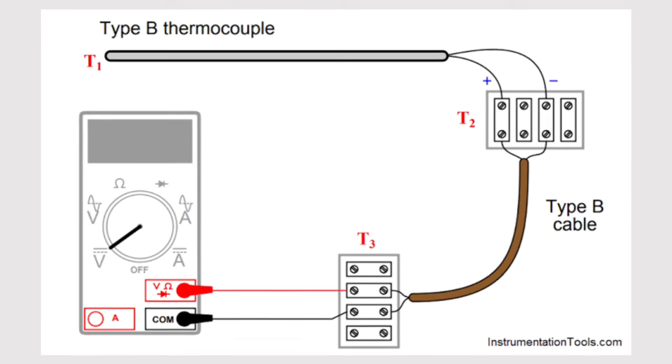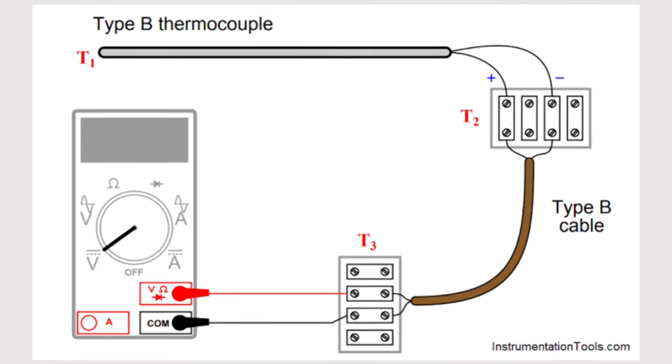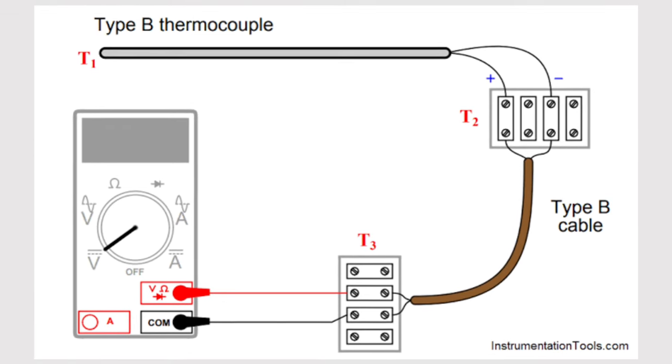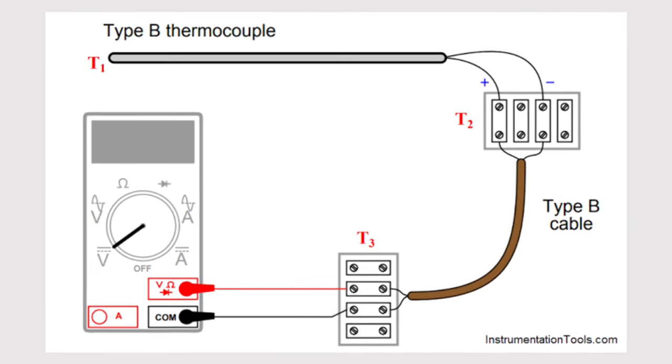You will need a multimeter that will read millivolts. Most meters read small voltages like millivolts, which is 1/1,000th of a volt, and a source of fire such as a lighter or small torch.